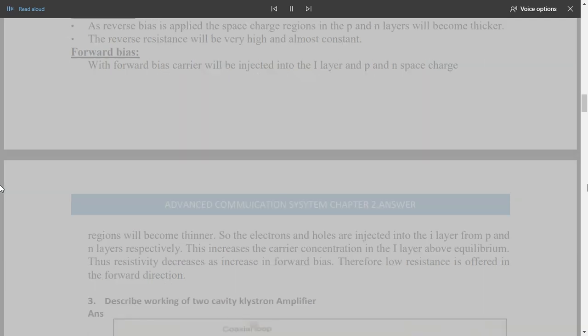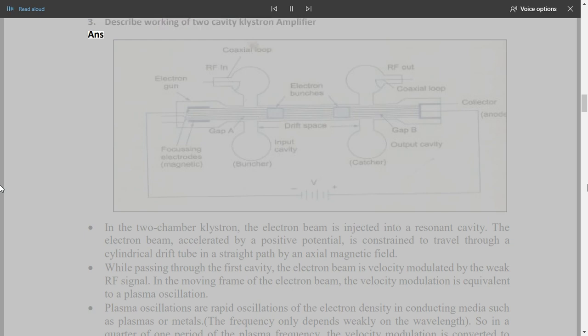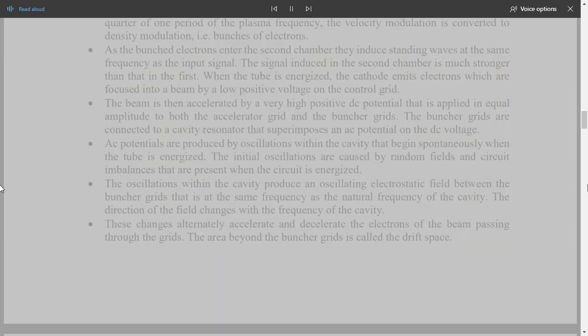So the electrons and holes are injected into the I layer from P and N layers respectively. This increases the carrier concentration in the I layer above equilibrium. Thus resistivity decreases as increase in forward bias. Therefore low resistance is offered in the forward direction. 3. Describe working of two-cavity clystron amplifier. In the two-chamber clystron, the electron beam is injected into a resonant cavity. The electron beam, accelerated by a positive potential, is constrained to travel through a cylindrical drift tube in a straight path by an axial magnetic field. While passing through the first cavity, the electron beam is velocity modulated by the weak RF signal.